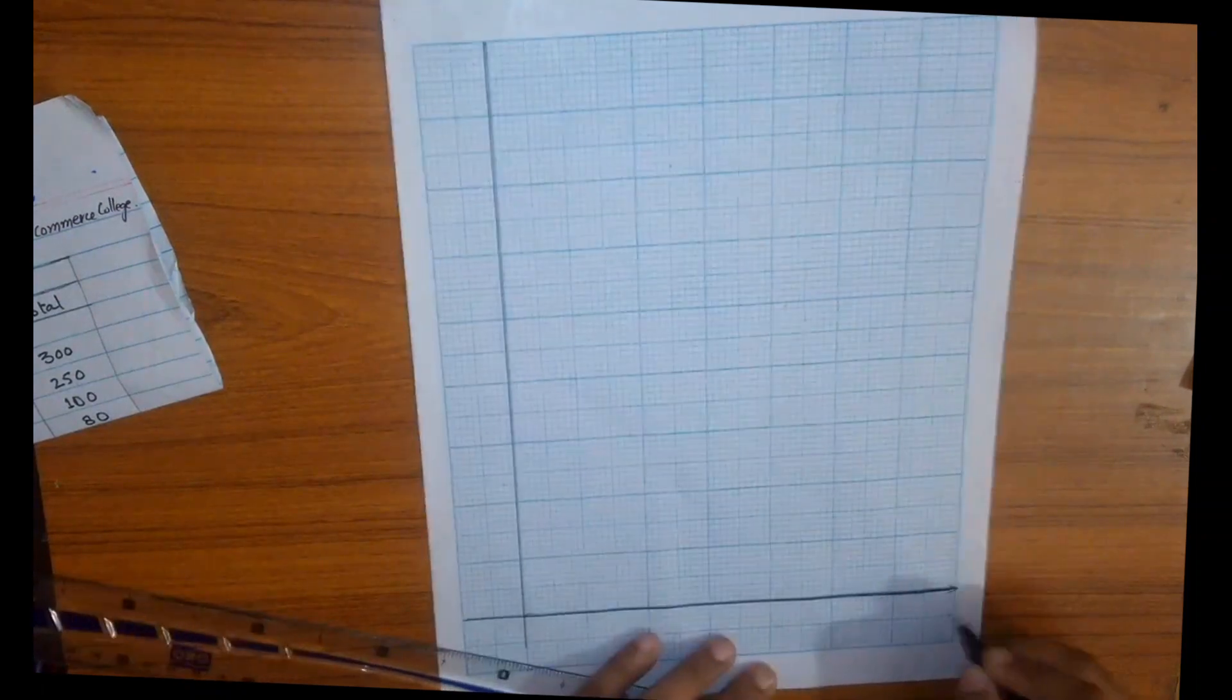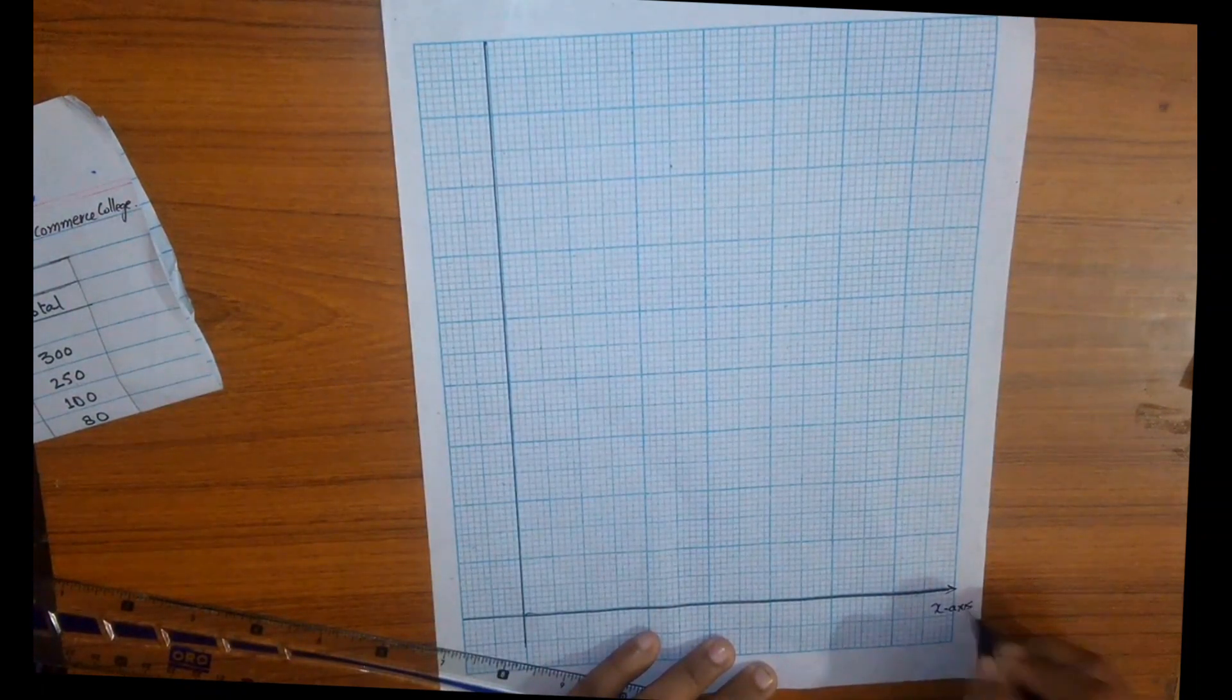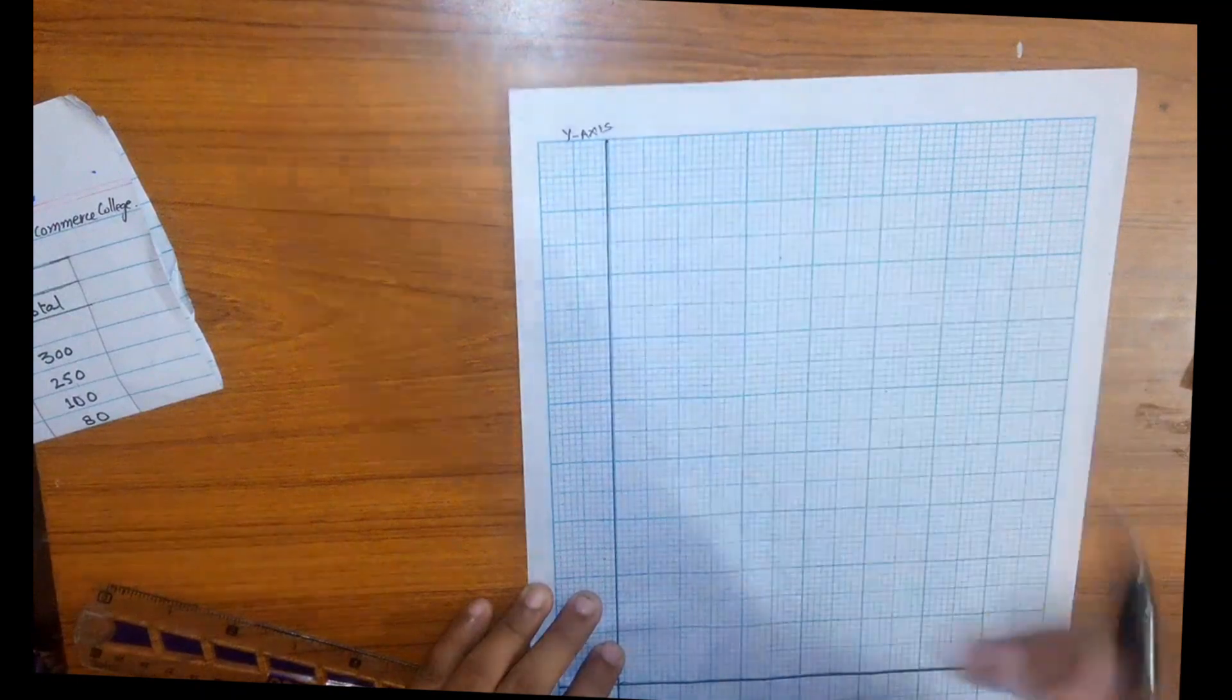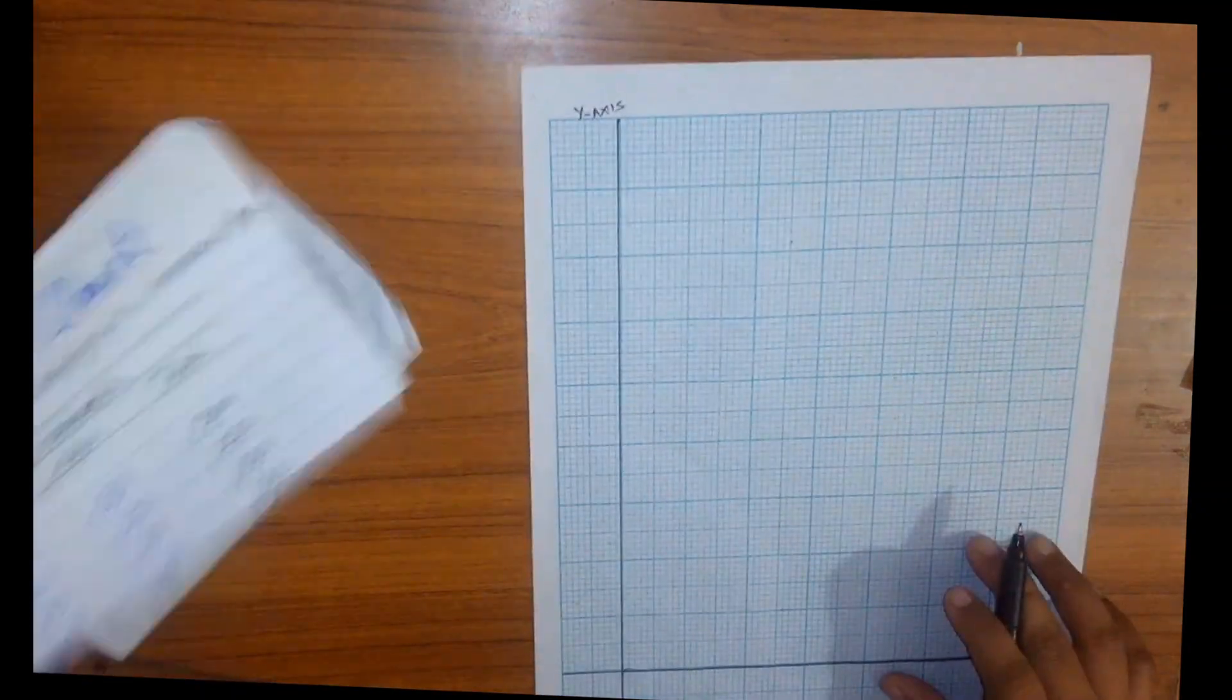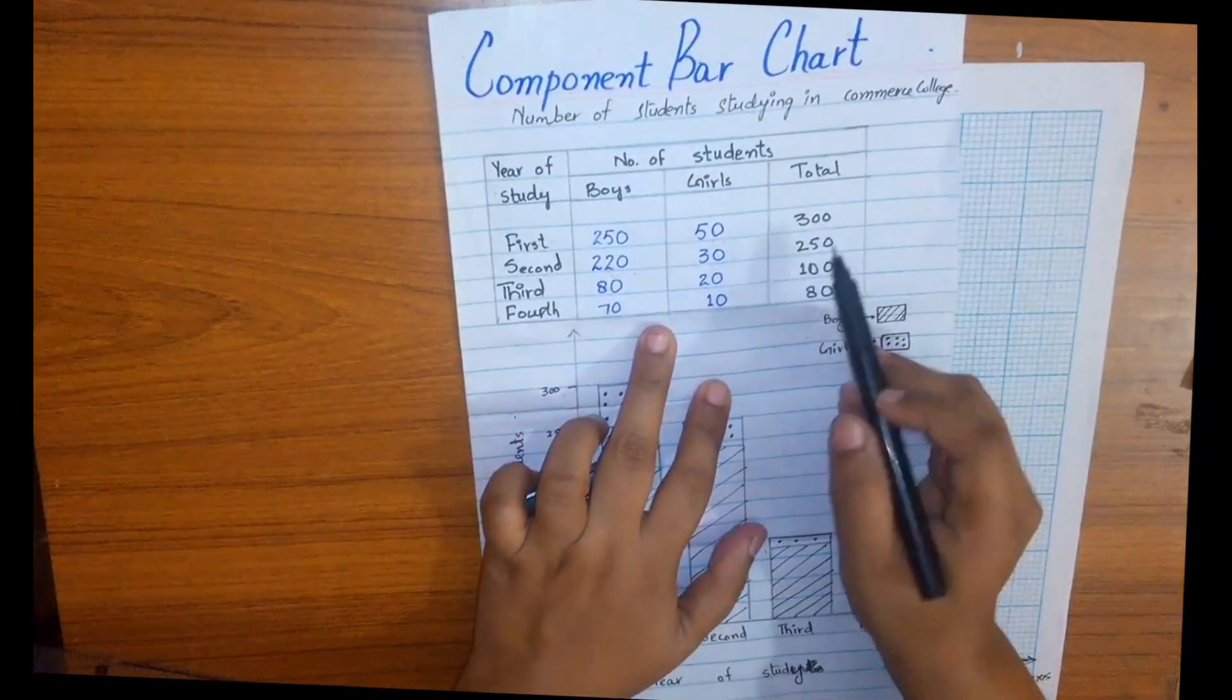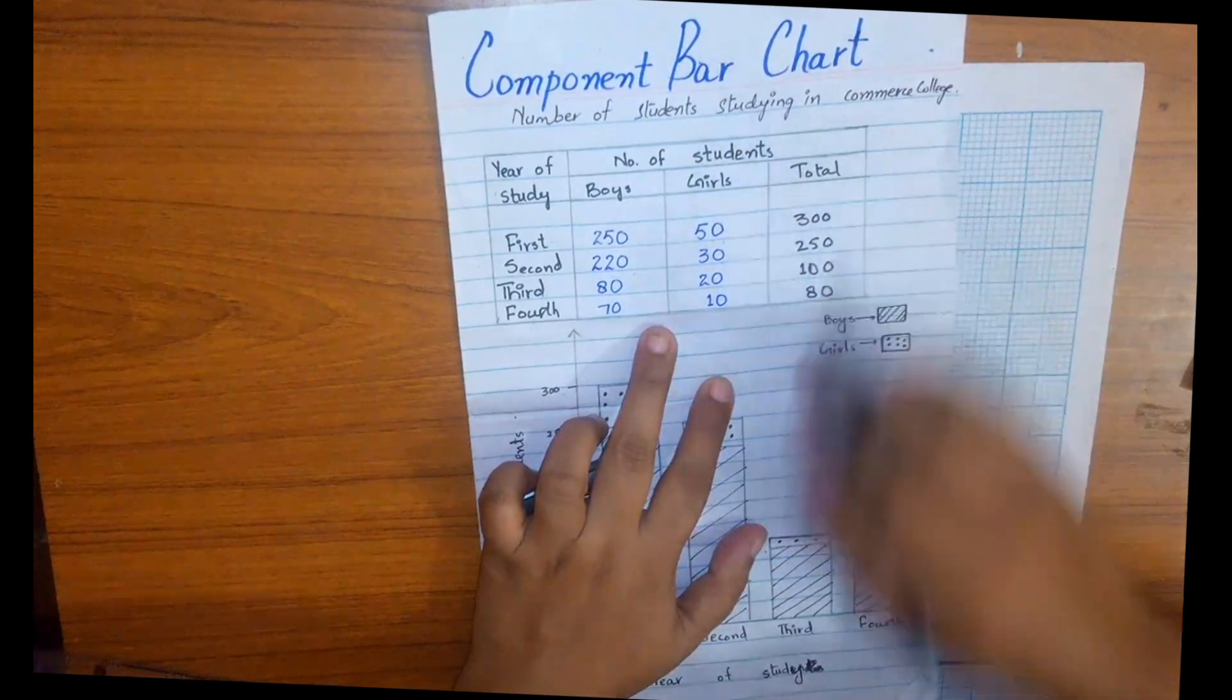Name them as x-axis and y-axis. Now we need to scale our graph. As we can see in our data, the largest value is 300, so we will scale our graph with the maximum value of 300.